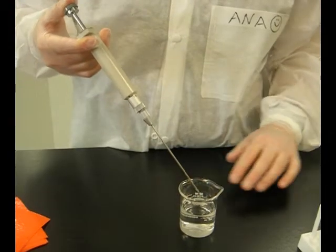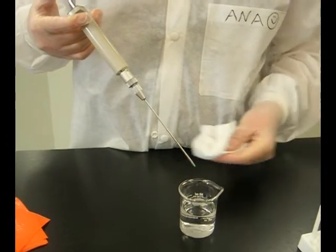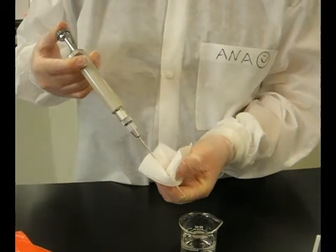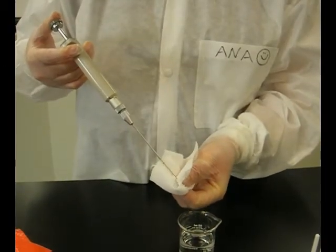Rinse the micropipette with deionized water a couple of times. With the plunger pressed all the way down, remove the pipette from the water and wipe it well, especially the plunger tip.